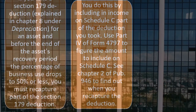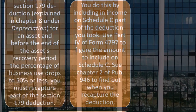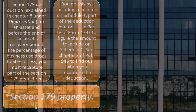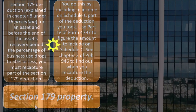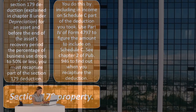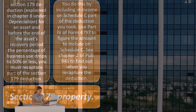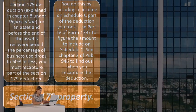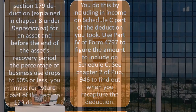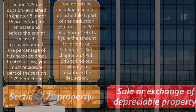So you handle this by including in income on Schedule C part of the deduction you took. Use part four of Form 4797 to figure the amount to include on Schedule C. See chapter two of Publication 946 to find out when you recapture the deduction.